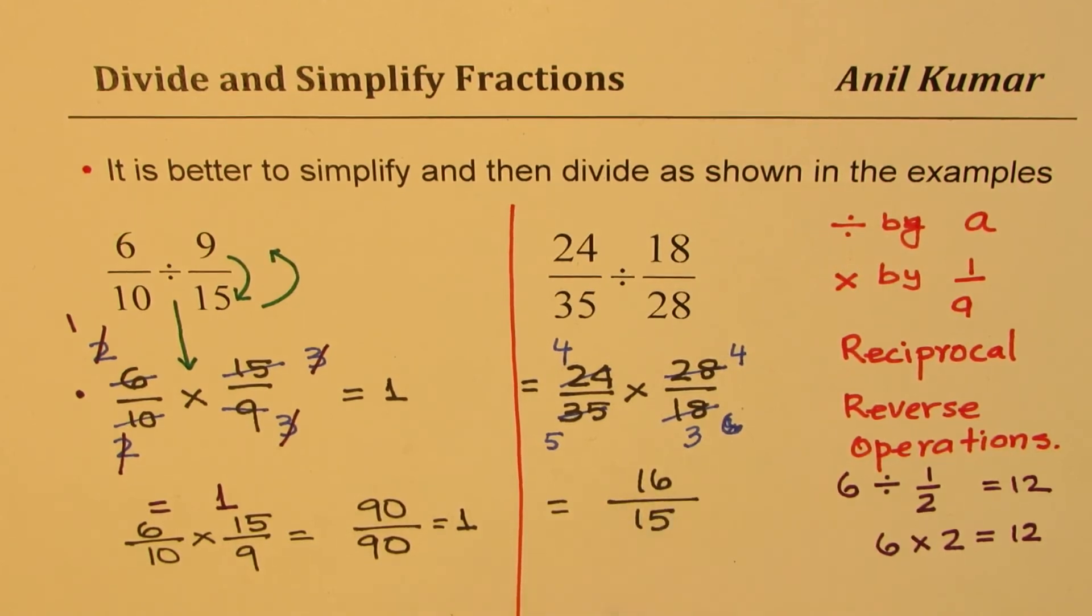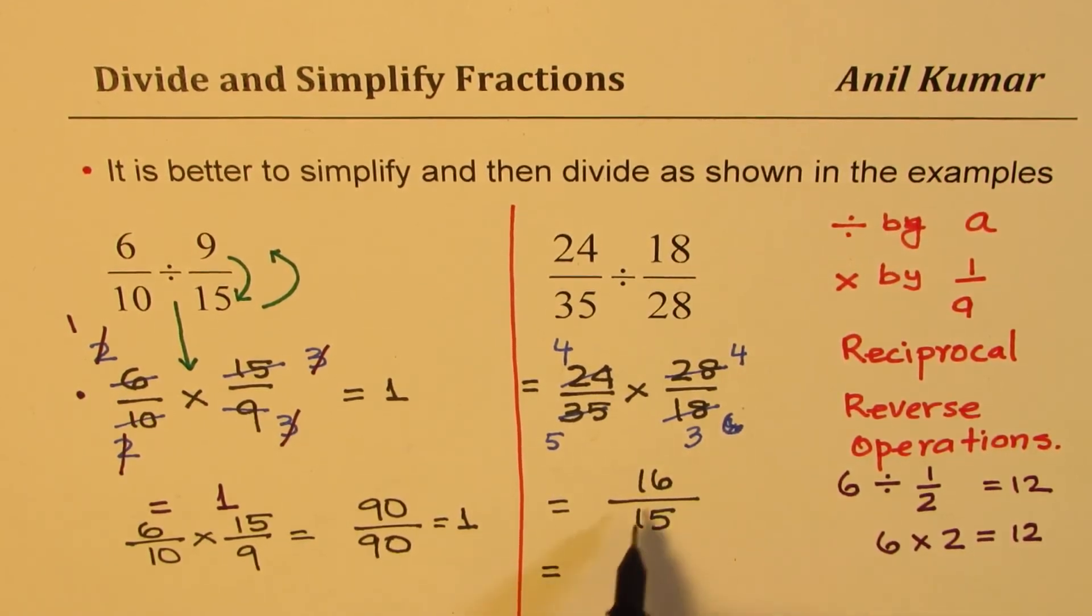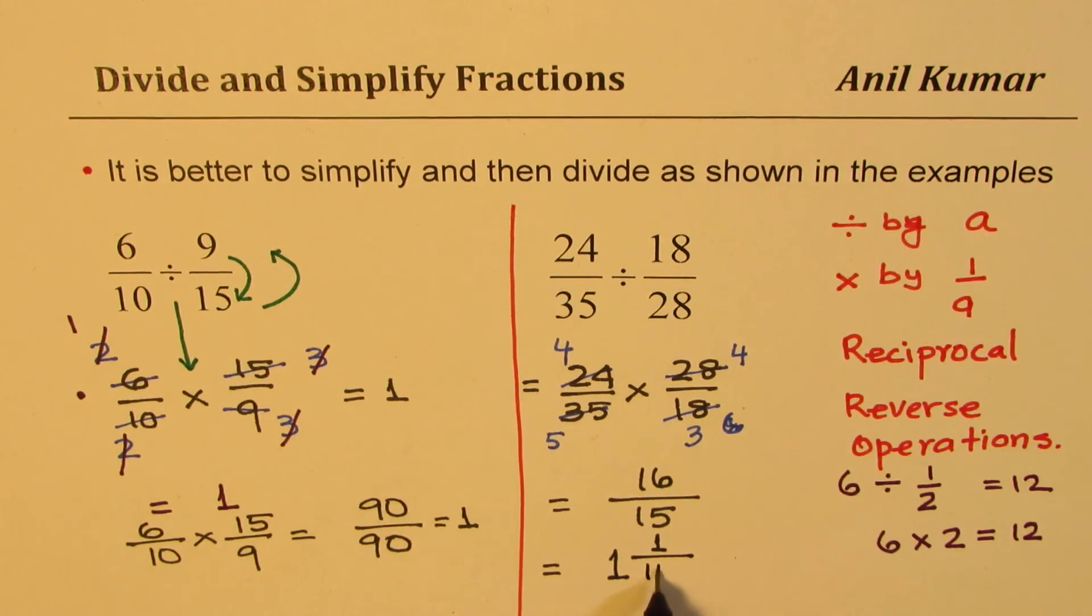Sometimes we would like to write this as a mixed number since this is an improper fraction. So if required, we could write this as 16 divided by 15 is 1 whole, 1 is left, so 1 over 15, correct?